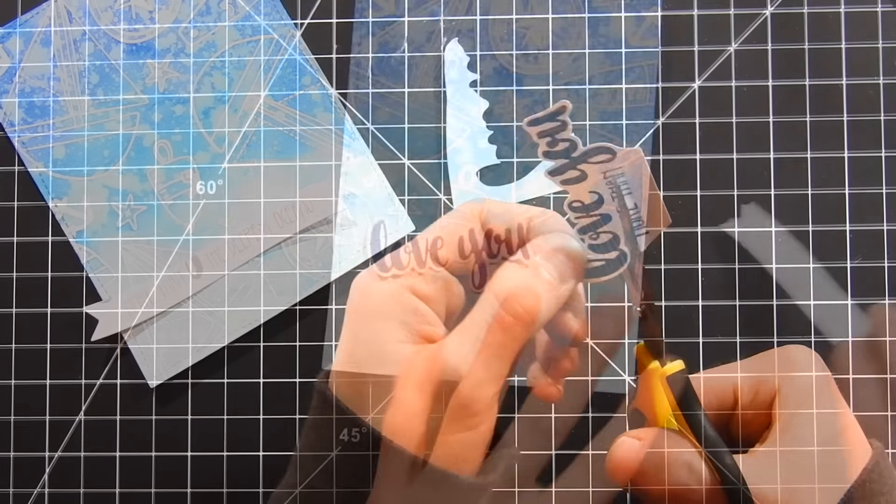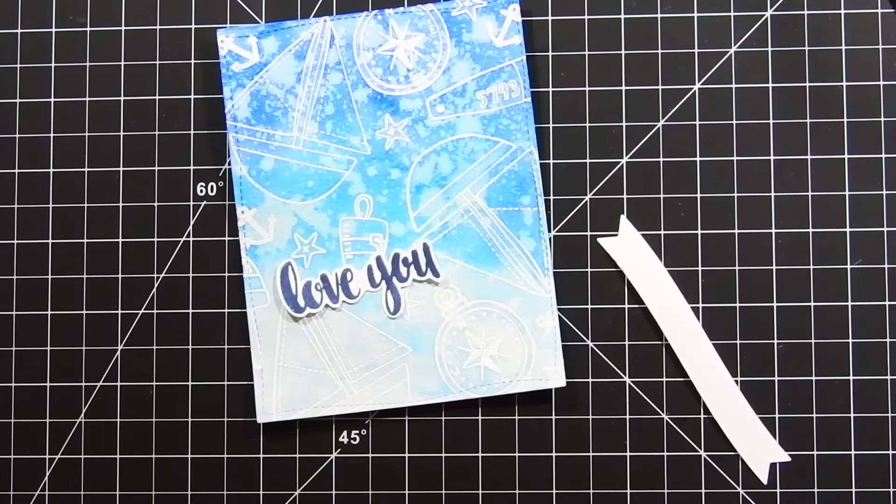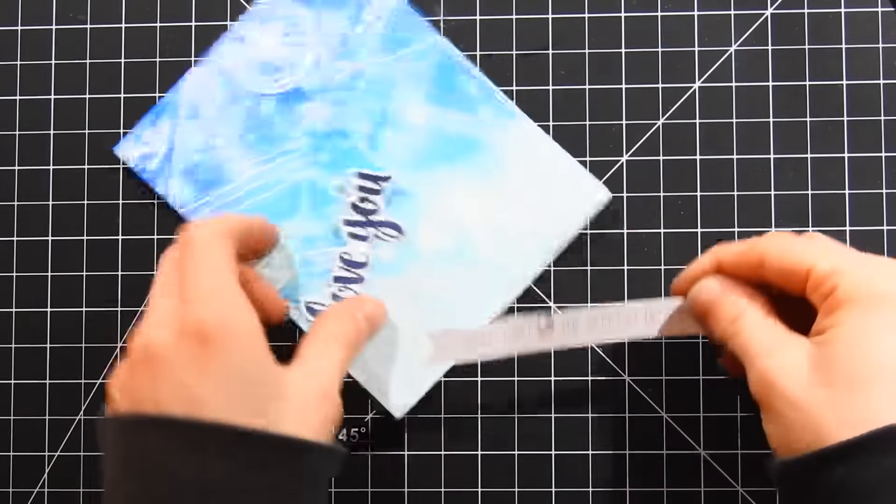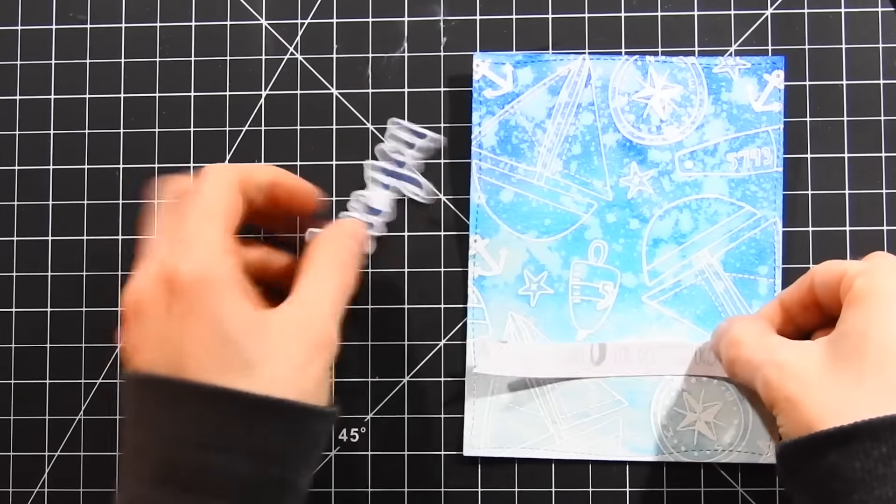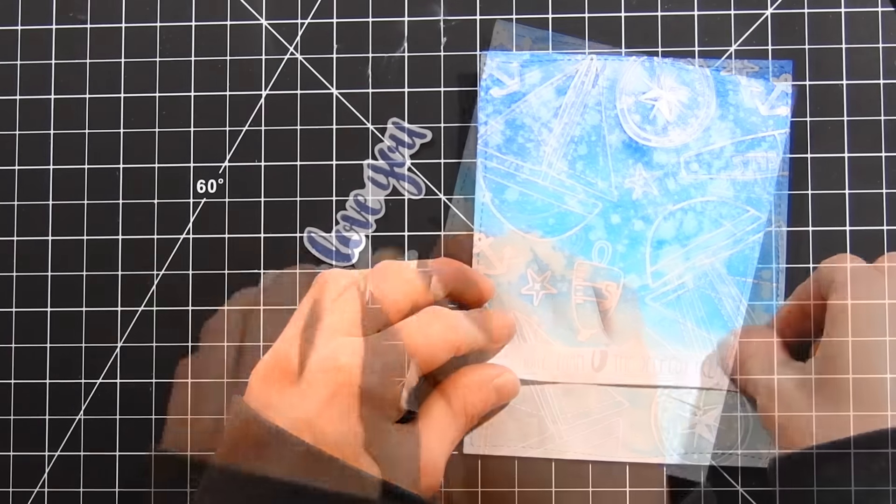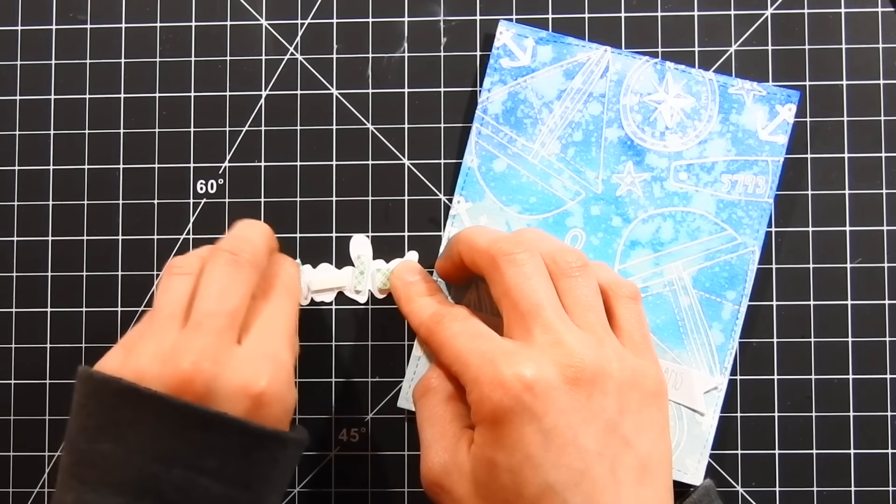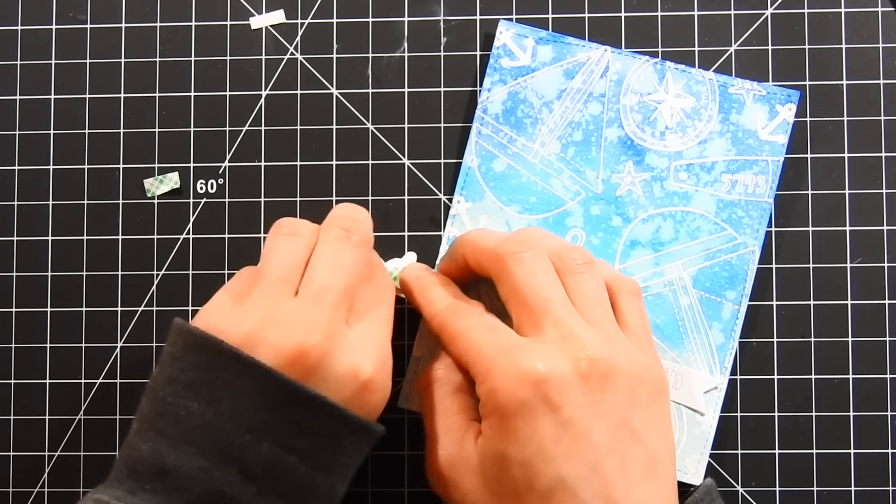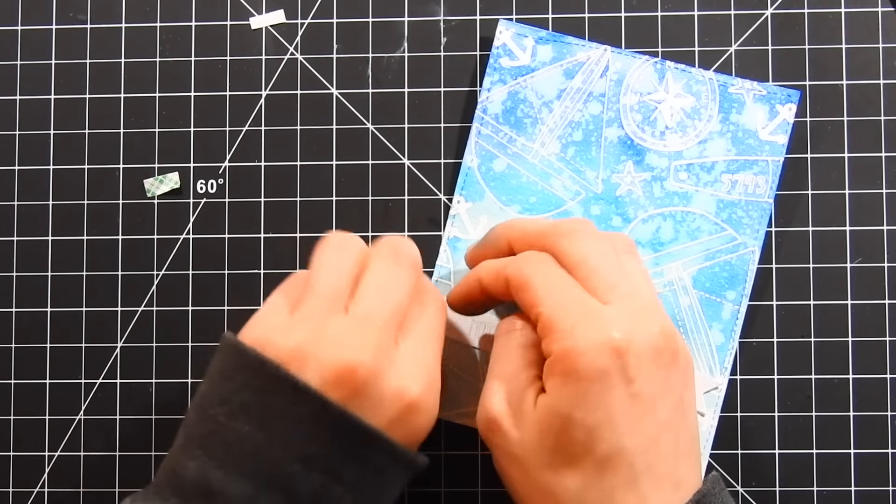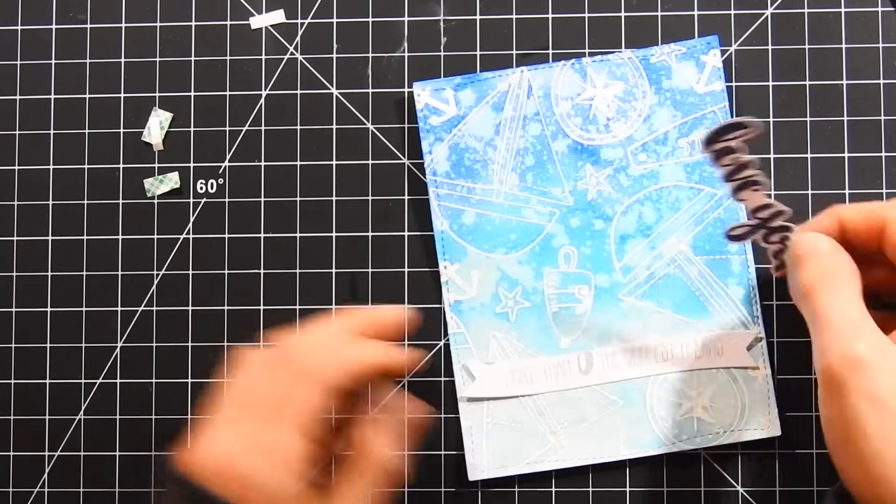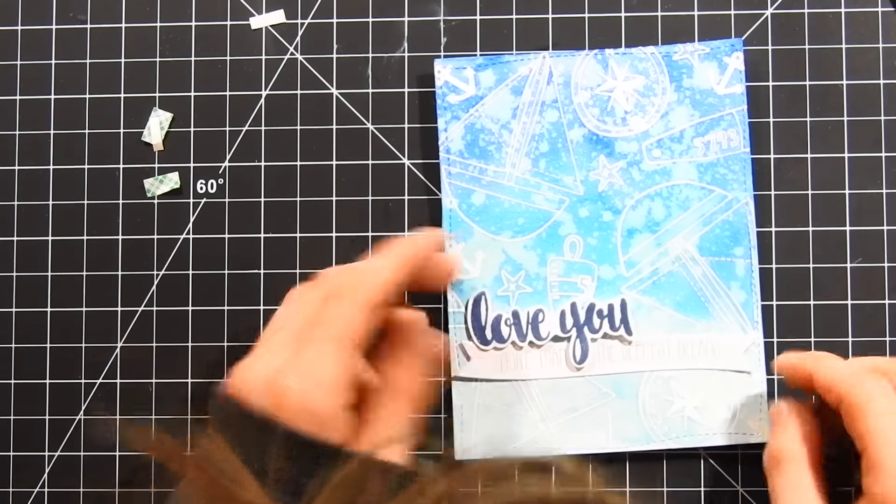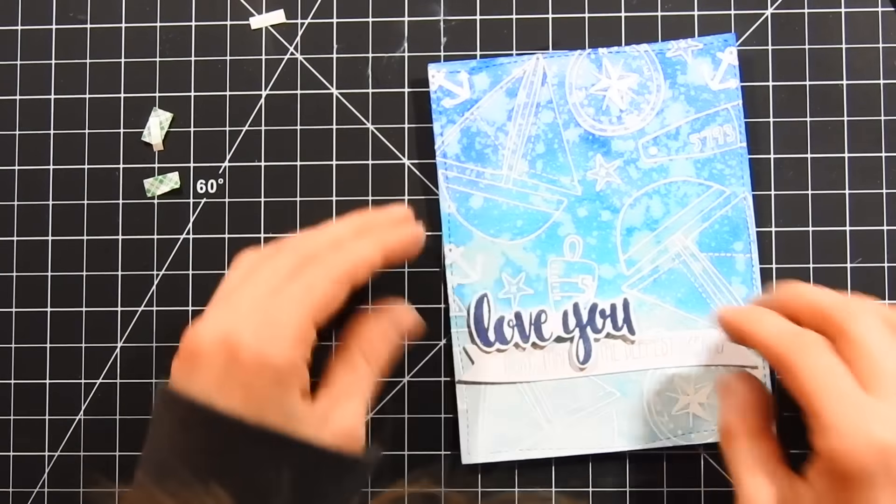All right, so once I fussy cut that out, I'm going to start putting my sentiments together. I'm putting some ATG adhesive on the back side of the banner and I'll go ahead and put this onto the bottom portion of this card. I'm leaving a little bit of room because I do want to add a little bit of baker's twine to the bottom, so I'm not going quite as far as I would have if I was just going to be placing the sentiment. I'm going to put some foam tape on the back side of the 'love you' portion and pop this up off of my card panel, and I'm laying that right over top of where the 'love you' started the stamp on that banner.